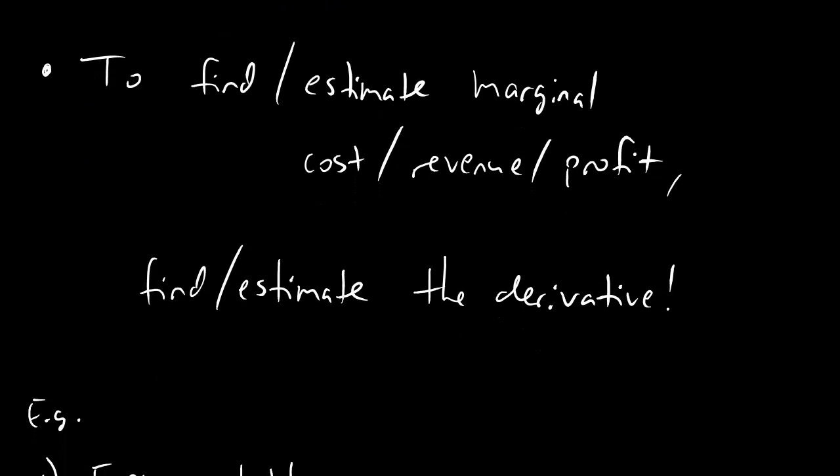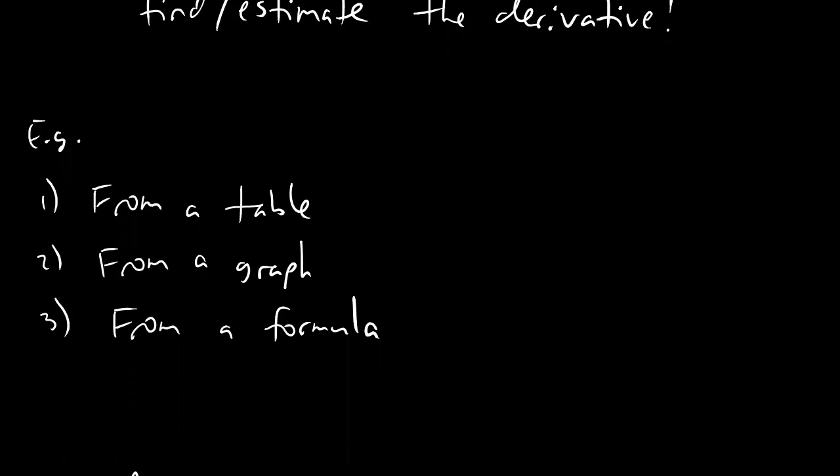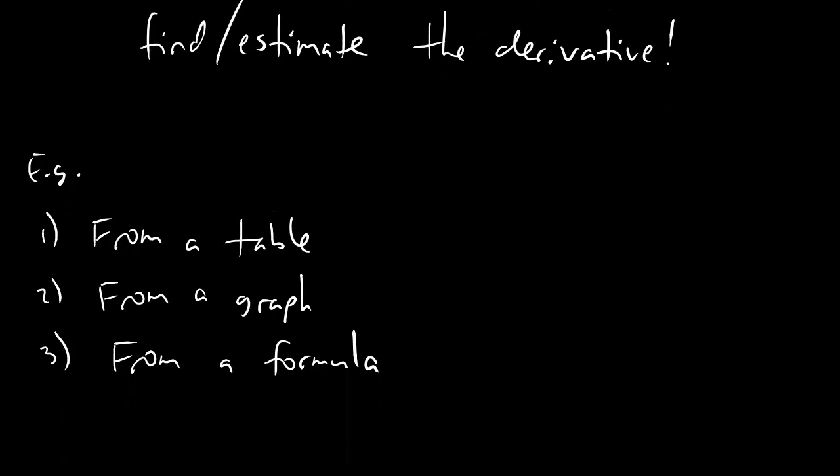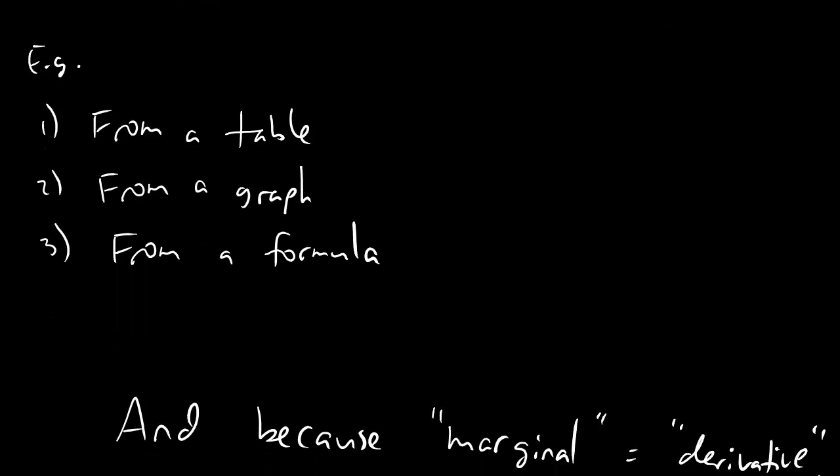All right, so here's the upshot. If you're supposed to find or estimate marginal stuff, then just find or estimate the derivative. And this is going to be showing up in ways that you are familiar with. The big three are going to be if you're trying to find or estimate marginal cost or revenue or profit based on a table or based on a graph or based on a formula. And you do your usual thing, people. If you've got a table, you take your slope to the right and your slope to the left and you average them. If you're doing this from a graph, then you draw the tangent line yourself and estimate its slope. And if you're doing it from a formula, if you know your derivative rules, you can just compute it exactly. Or if you don't know your derivative rules, then you can still pick two close-by points and find the slope there to estimate that.